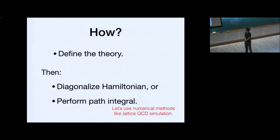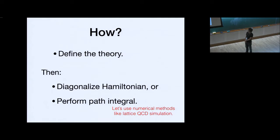Physicists have spent more than 100 years just trying to diagonalize the Hamiltonian, and it's a very tough task. So we have to think how, in practice, we can do such calculations. Our approach, which I will explain over three talks, is the application of numerical methods like lattice QCD simulation — explicit numerical tools to perform path integrals.